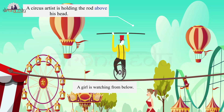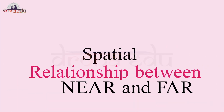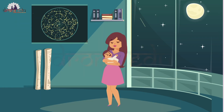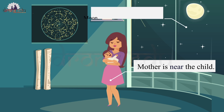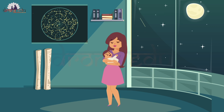And finally, let's see the spatial relation for near and far. Look at this picture — you can observe that the mother is near the child and the moon is far away from the child. Likewise, we can use these spatial relation words, and this is about the lesson on spatial understanding.